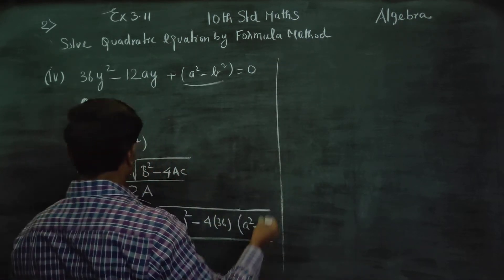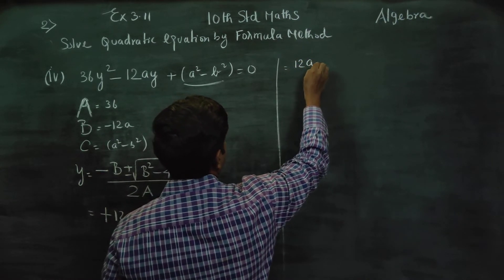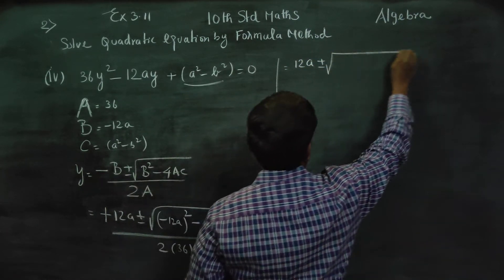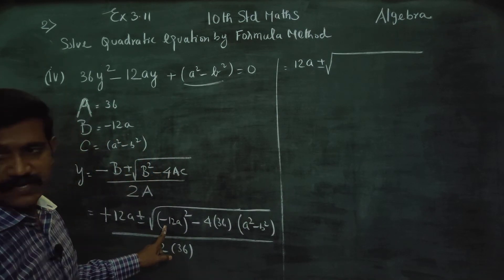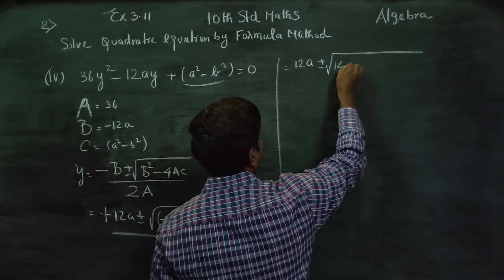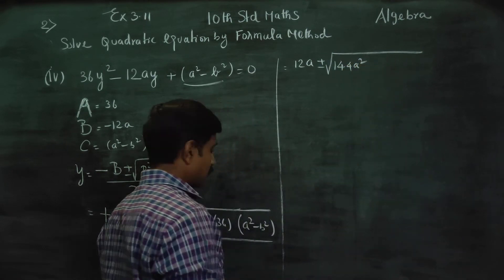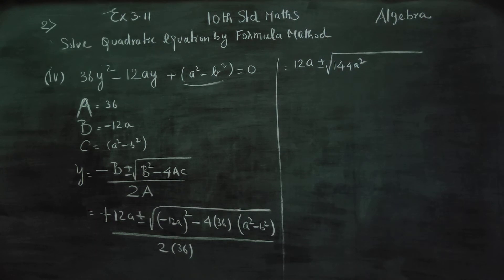Next stage: equal to 12A plus or minus square root. Minus into minus gives plus. 12 squared is 144, so we get 144A squared.